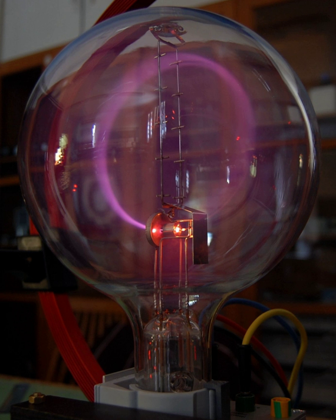Researchers noticed that objects placed in the tube in front of the cathode could cast a shadow on the glowing wall, and realized that something must be traveling in straight lines from the cathode.